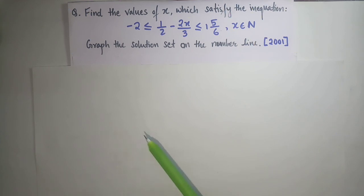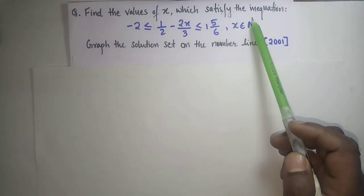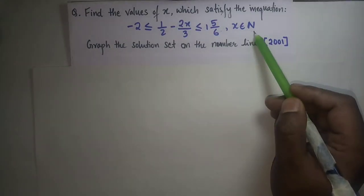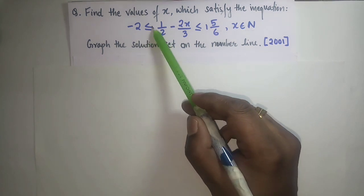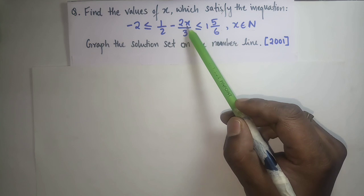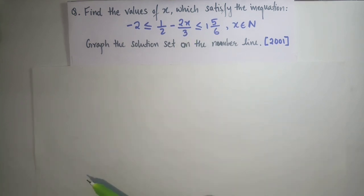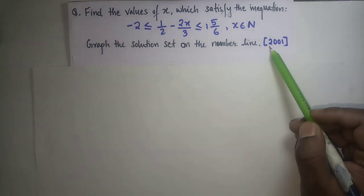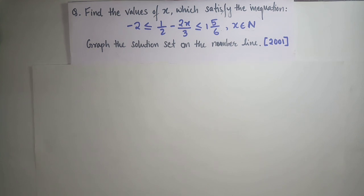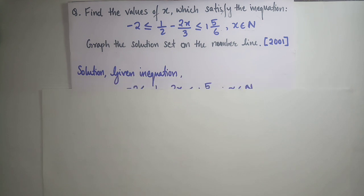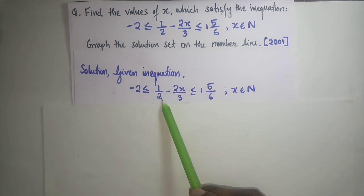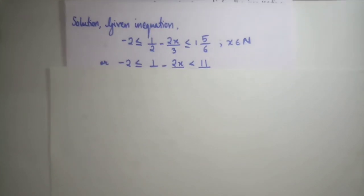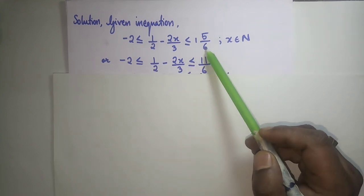Let us solve a question. The question says: find the value of x which satisfies the inequation −2 ≤ 1/2 − 2x/3 ≤ 1(5/16), where x belongs to N. Here N means natural numbers. This is a one-variable inequation with ≤ signs on both sides. This question appeared in ICSE 2001 and carries four marks. The first step is to write the given inequation: −2 ≤ 1/2 − 2x/3 ≤ 11/6, x ∈ N.